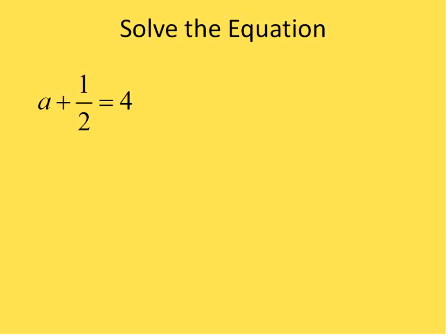Here's an equation: a plus 1/2 is equal to 4. When you're asked to solve an equation, the goal is to solve for your variable — in this case, get a completely by itself. To do that, since we have a plus 1/2, I'm going to subtract 1/2 from both sides of the equation. Remember, to keep it balanced, you have to do it to both sides.